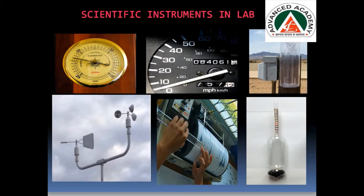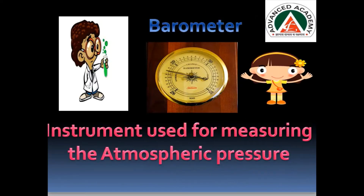Her uncle said, 'Pihu, these are scientific instruments.' Pihu said, 'Can you explain what these are and why they are used?' Uncle said, 'Okay Pihu, I will tell you everything one by one.' So he showed Pihu one instrument and told her, 'Pihu, this is a barometer. It is the instrument used for measuring the atmospheric pressure.'